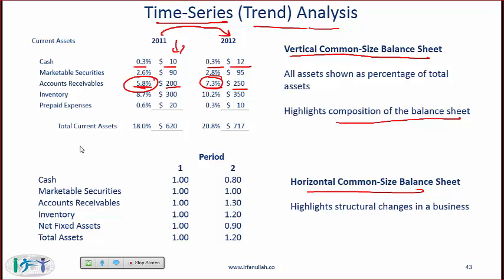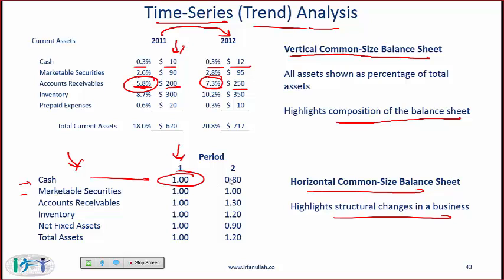Now let's look at the horizontal common-sized balance sheet at the bottom. This depiction highlights structural changes in a business. With a horizontal common-sized balance sheet, we take each balance sheet item and in the base year we set the item equal to 1. Cash for example was set to 1 in period 1, then in period 2 cash came down by 20% to 0.8. Marketable securities stayed the same. Accounts receivable went up by 30%. On the liability and equity side you will see how the debt and equity are changing relative to the original period.